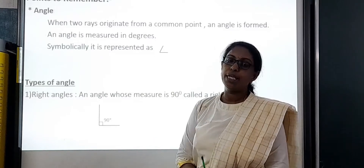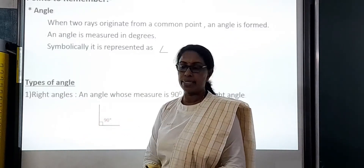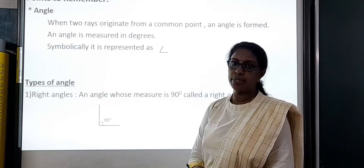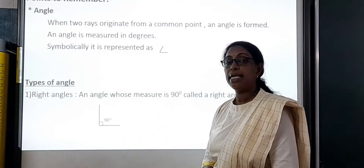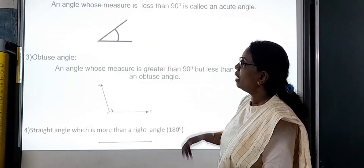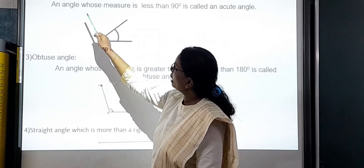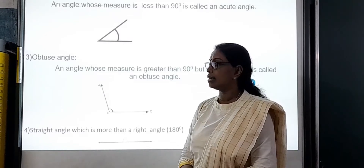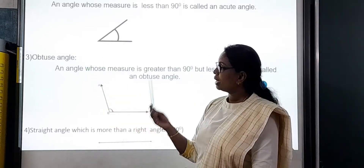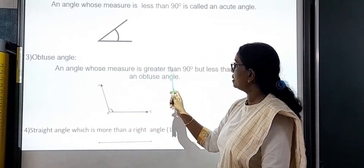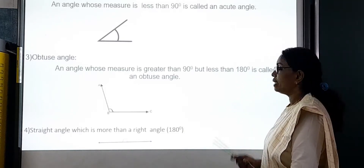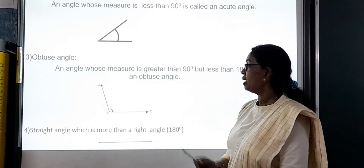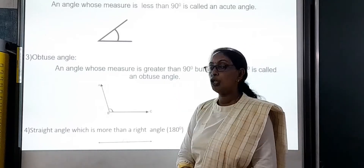How do we know the types of angles? The first one is the right angle — an angle whose measure is 90 degrees is called a right angle. Next is the acute angle — an angle whose measure is less than 90 degrees is called an acute angle. Next is the obtuse angle — an angle whose measure is greater than 90 degrees but less than 180 degrees is called an obtuse angle.